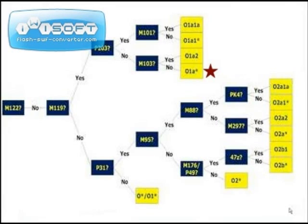Back to M119 and follow the path if you did not have this mutation. Presence of P31 places you within subclade O2. For a more refined placement within the subclade, follow the rest of the decision paths until you end at a yellow box — this is your subclade. If you have M95, M88, and PK4, you are in subclade O2A1A.